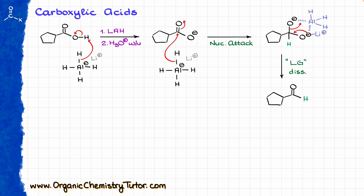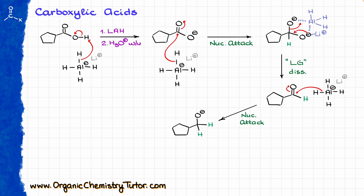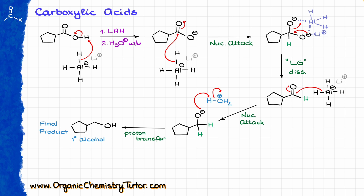As soon as we have our aldehyde, we have lithium aluminum hydride around. So this reagent is going to come in, do the nucleophilic attack on our carbonyl, and give us the corresponding alkoxide as an intermediate. We are going to work up with acid — acid comes in, protonates this position, giving us the final product, which is again going to be a primary alcohol.